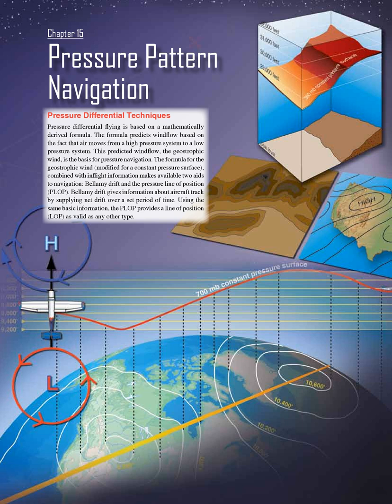The formula for the geostrophic wind, modified for a constant pressure surface, combined with in-flight information makes available two aids to navigation: Bellamy Drift and the Pressure Line of Position (PLOP). Bellamy Drift gives information about aircraft track by supplying net drift over a set period of time. Using the same basic information, the PLOP provides a line of position (LOP) as valid as any other type.